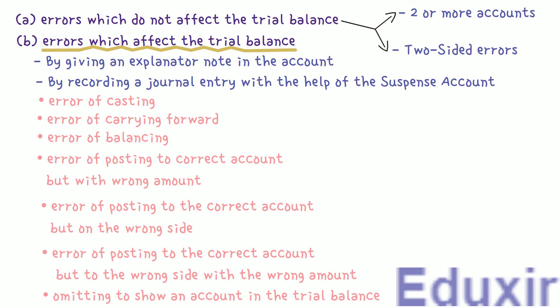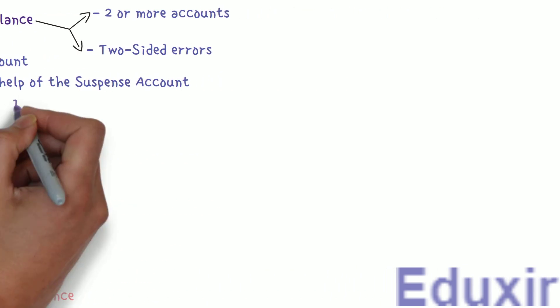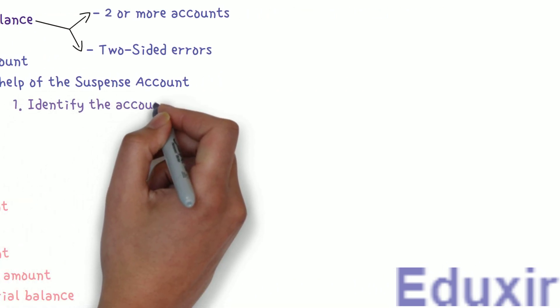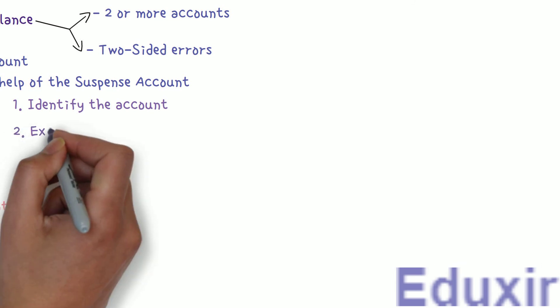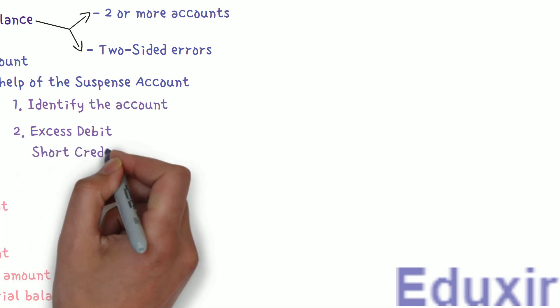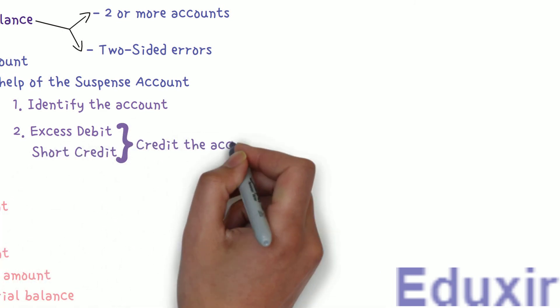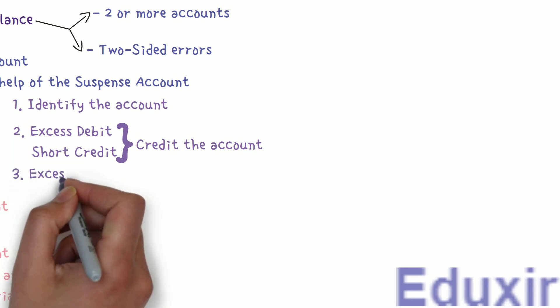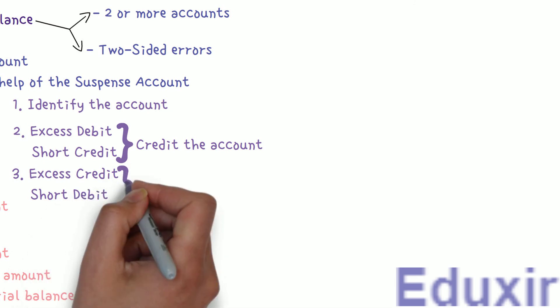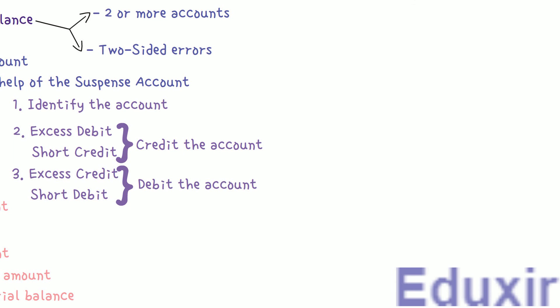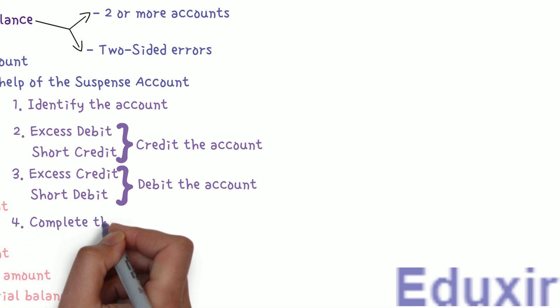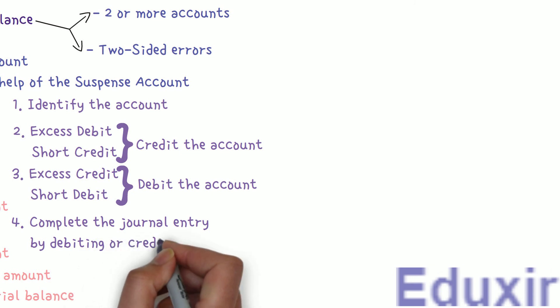The steps involved in rectifying one-sided errors using the suspense account are as follows: identify the account affected due to the error; ascertain the amount of excess debit or credit or short debit or credit in the affected account. If the error has resulted in excess debit or short credit, we have to credit the account with that amount. If the error has resulted in excess credit or short debit, we have to debit the account with that amount. We then complete the journal entry by debiting or crediting the suspense account as the other account affected.